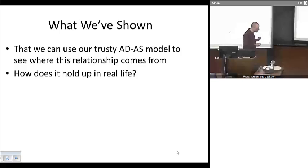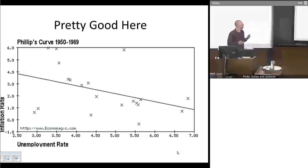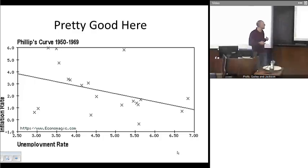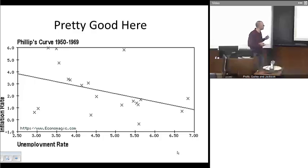The question becomes: in real life, to what extent does this actually hold up? Does it match up with the data we observe? Looking at the 1950s and 1960s, the relationship seems to hold up. It's not perfect because clearly other things affect inflation and unemployment, but the best-fitting regression line has a downward slope, which is exactly as predicted by the Phillips curve. Other things matter besides monetary policy — other factors affect output, employment, and the inflation rate.